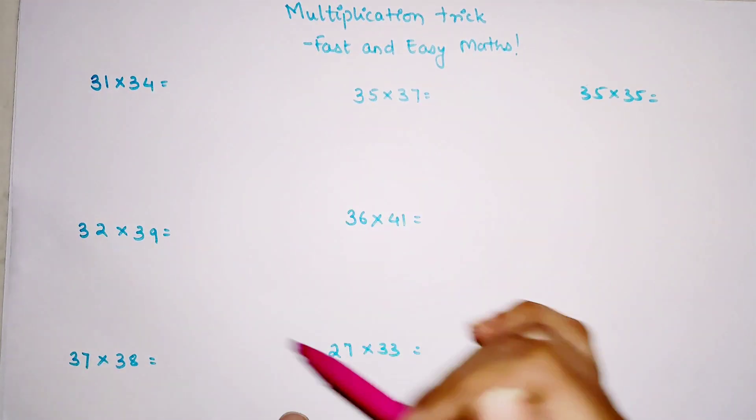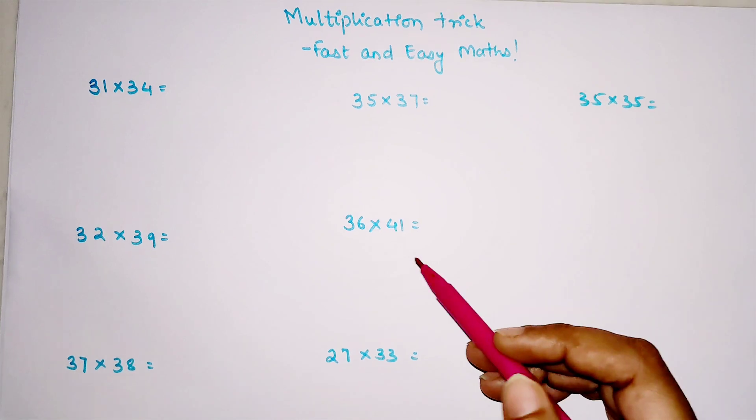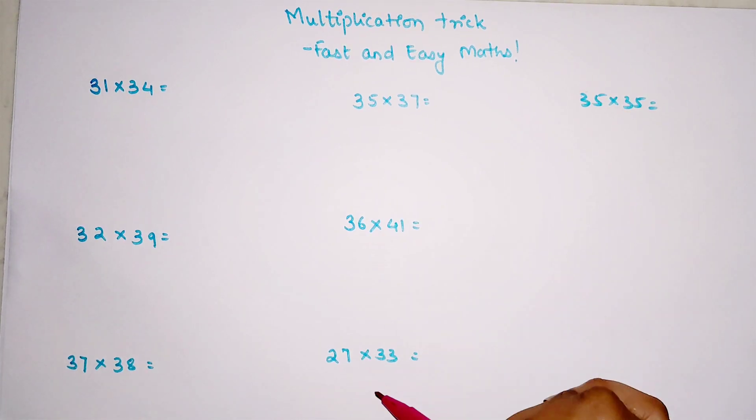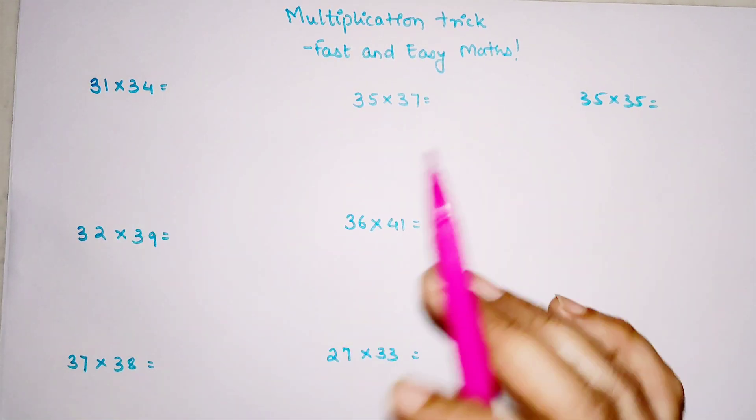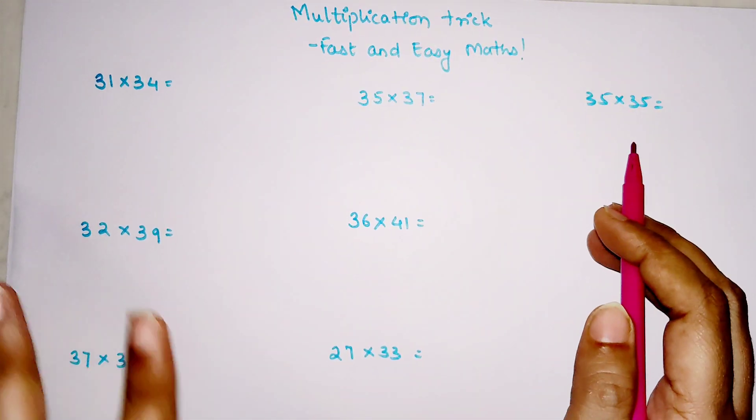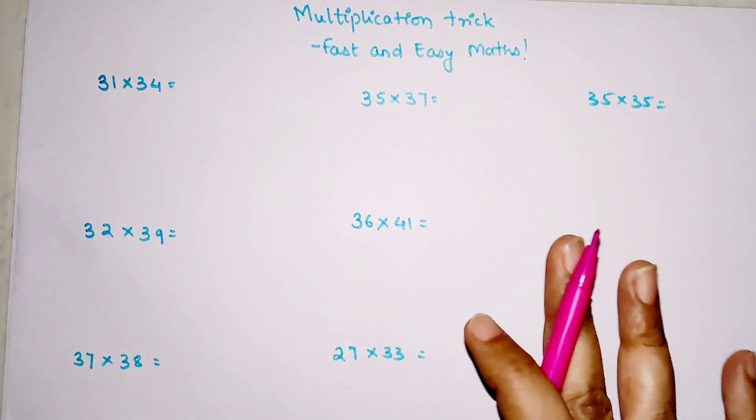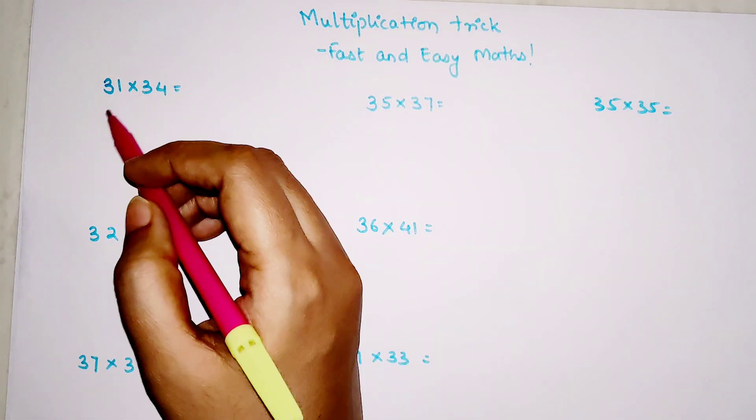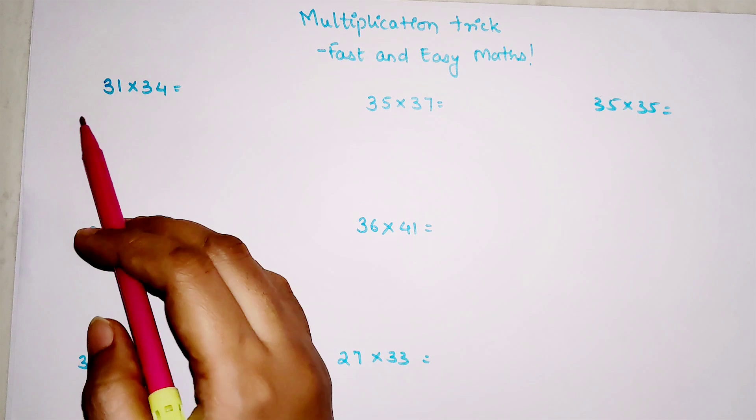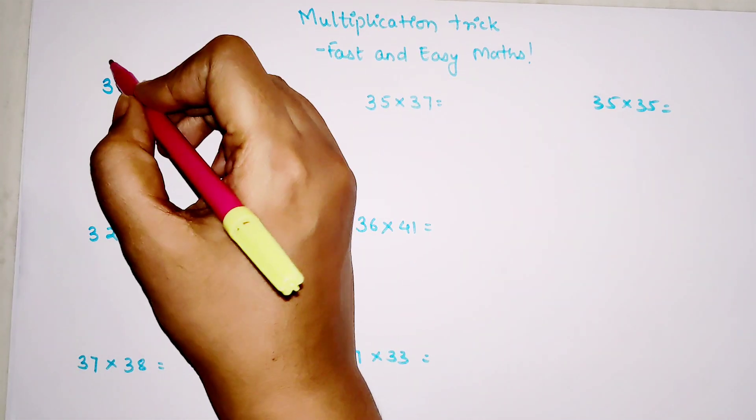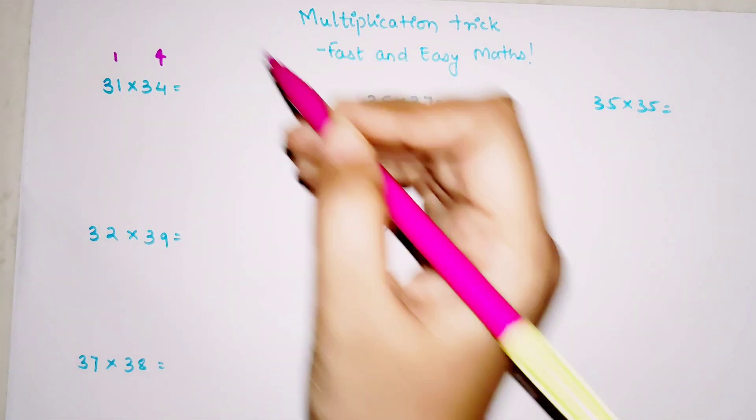This trick is working for numbers which are in the 30s. We can do something in 40s and 20s, but first you need to get the hang of the actual trick. We're finding all of these numbers which are very close to 30, so first we'll see how further away these numbers are from 30.